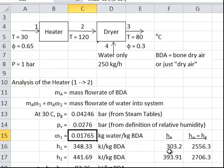At 30 degrees C, air has a specific enthalpy of 303.2 kJ per kg. At 120 degrees C, I found 393.91 kJ per kg. Water has 2556.3 at state 1, 2706.3 at state 2. This is saturated vapor water at those temperatures.